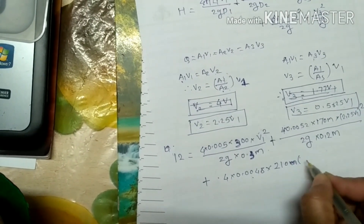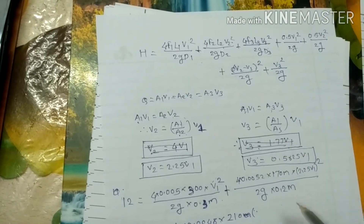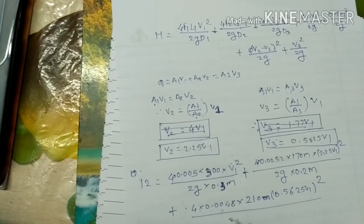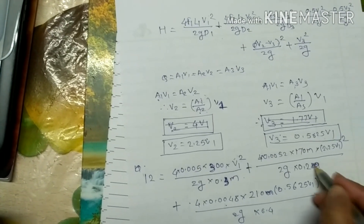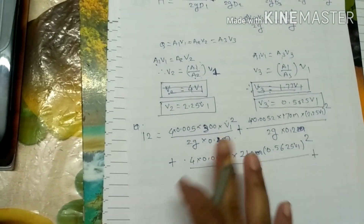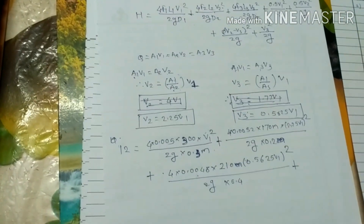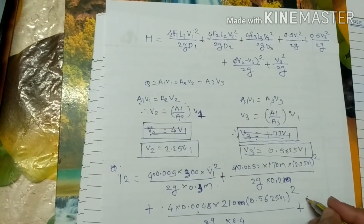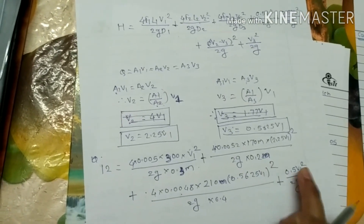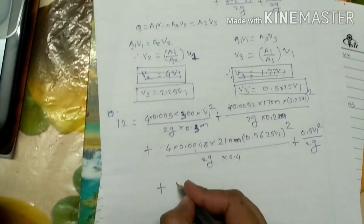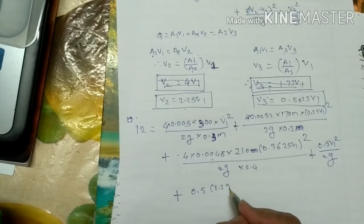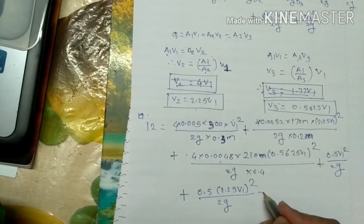This covers all the major loss terms. Since the expression grows long, make sure you write this step at the top of the page. Now for minor losses — entrance loss: 0.5·v1² / 2g. All terms will have v1² as common. Next is the contraction loss: 0.5·(2.25·v1)² / 2g.